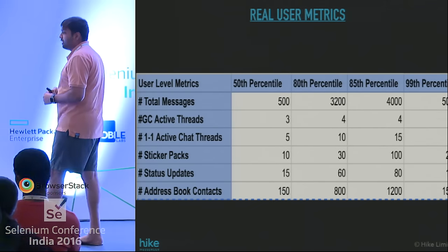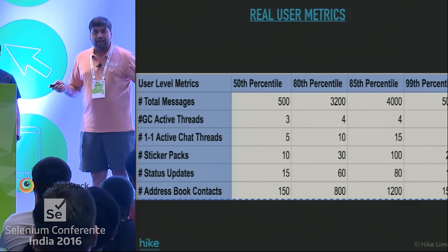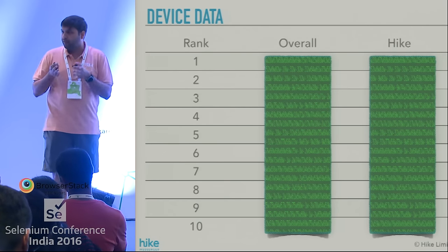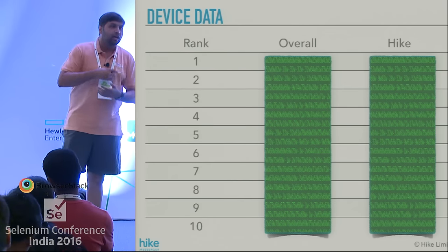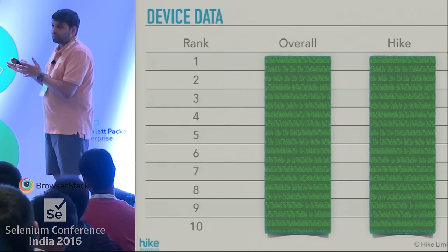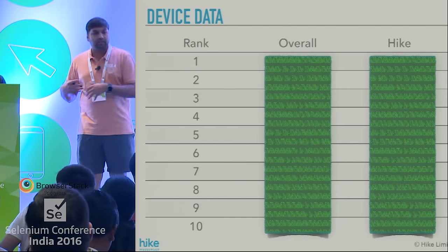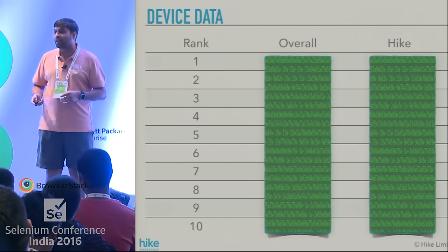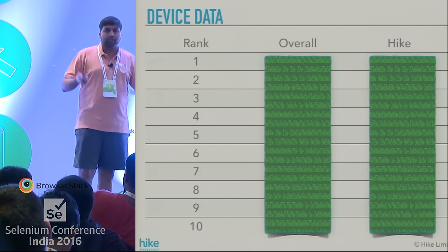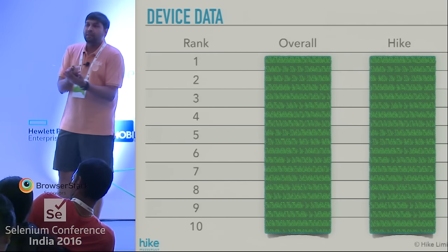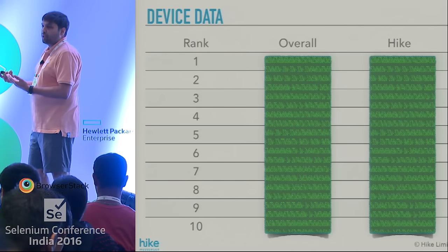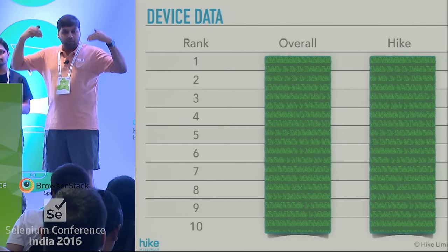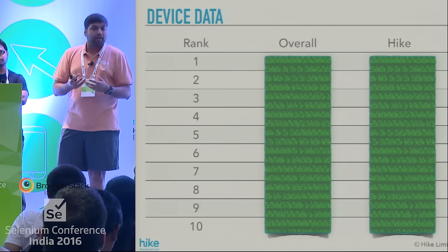Once we've segmented users into different buckets, the next thing is to look at device-specific data. In India, what are the top phones on which people use messaging apps, and within that, which are the top devices on which Hike is used? We looked at both sets of information. The point is to do this kind of analysis, pick the list, and then figure out how you're going to benchmark based on this.